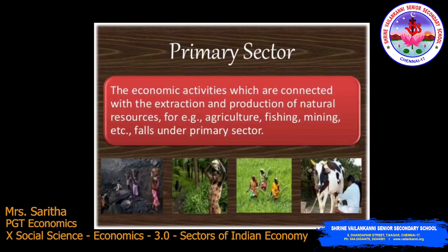The primary sector covers activities undertaken directly by using natural resources. Examples include cotton, dairy, minerals, ore, fishing, and agriculture. For the growth of a cotton plant, we depend entirely on natural factors like rainfall, climate, and sunshine. When we produce goods by exploiting natural resources, it is an activity of the primary sector.